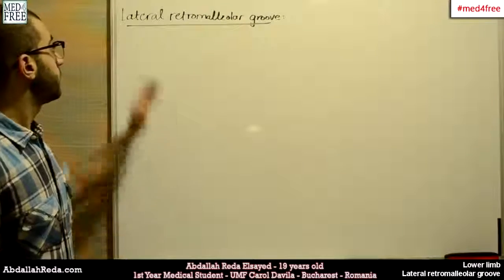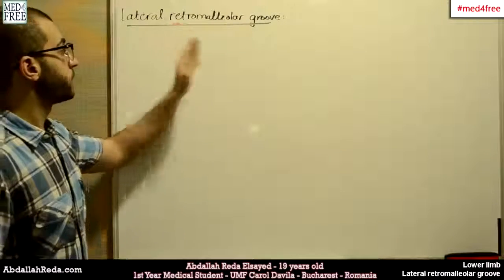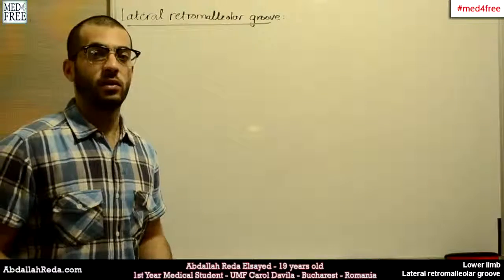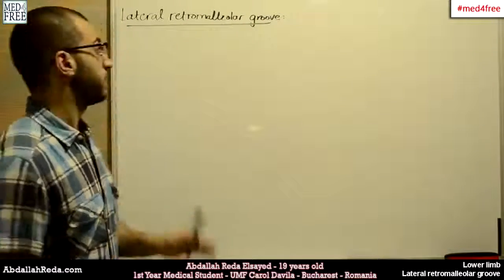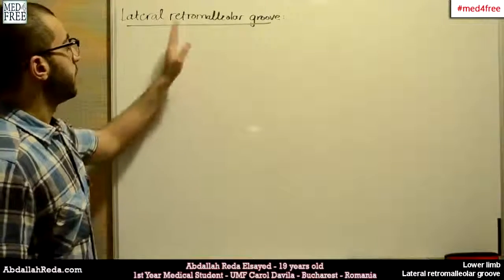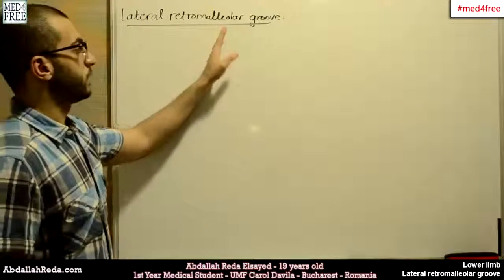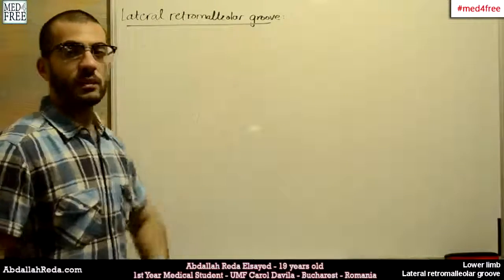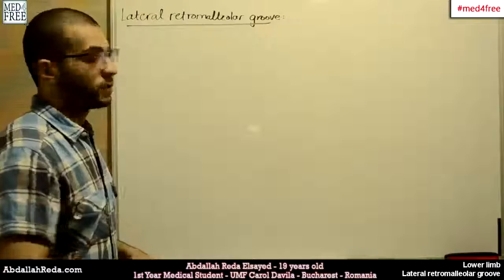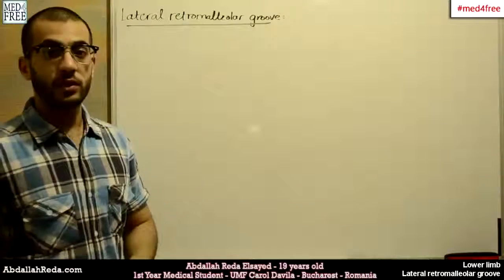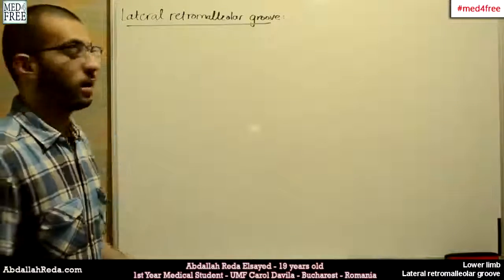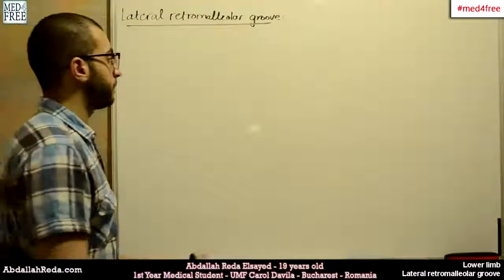Today we're going to talk about the lateral retromalleolar groove. This groove is found on the lateral aspect of the foot behind the malleolus. The malleolus, which is found on the lateral side, is actually the end of the fibula.